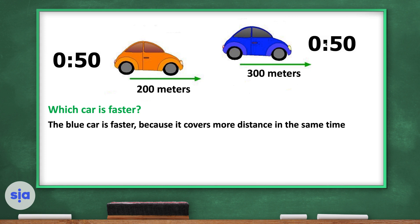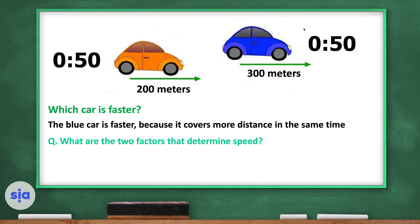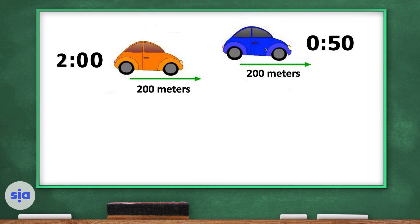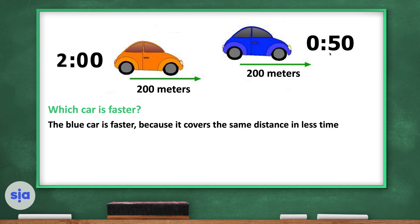The two factors that determine speed are distance and time. In another example, the blue car moves 200 meters in 50 seconds while the yellow car moves 200 meters but takes two minutes. The blue car is faster because it covers the same distance in less time. Again, the two factors that determine speed are distance and time.